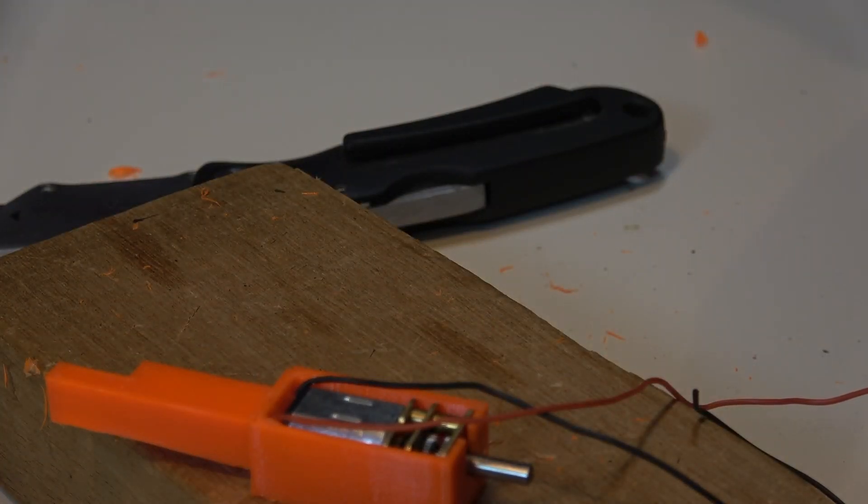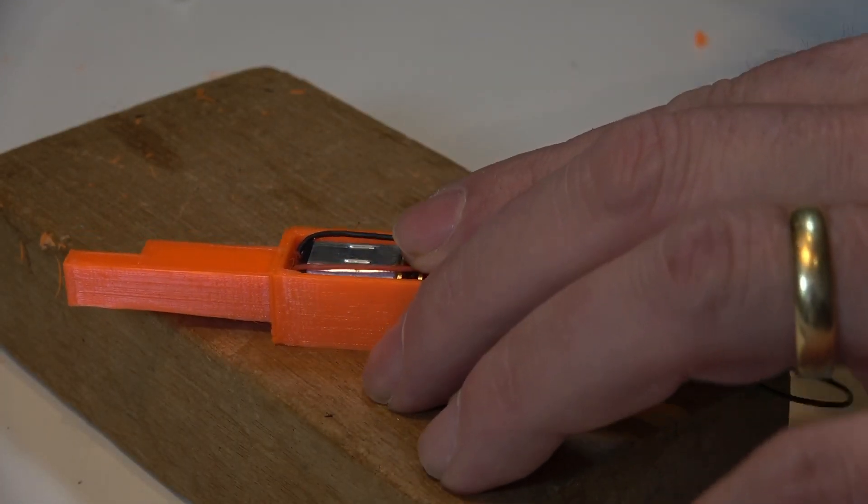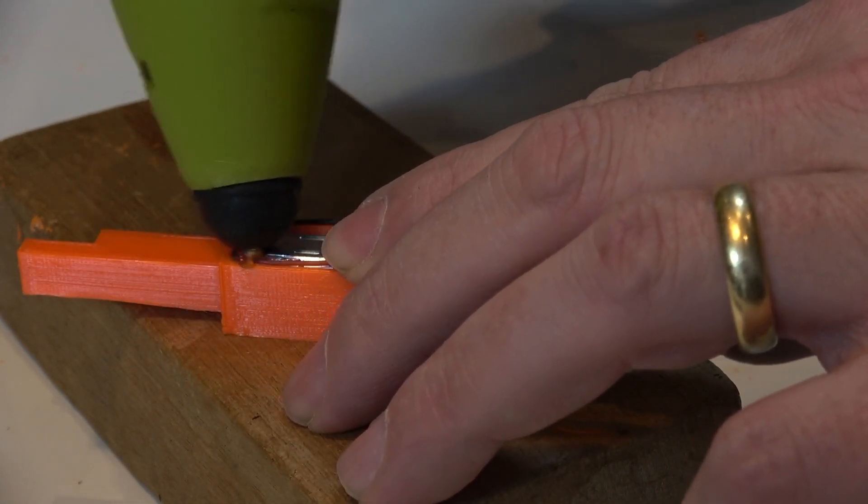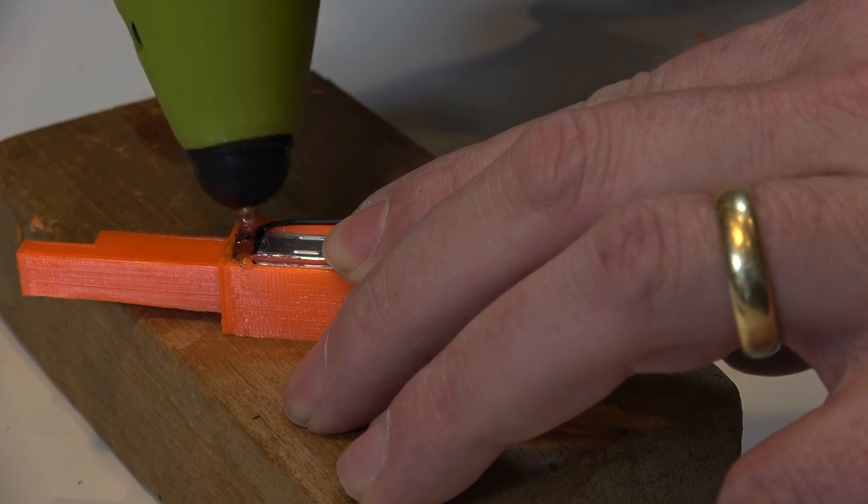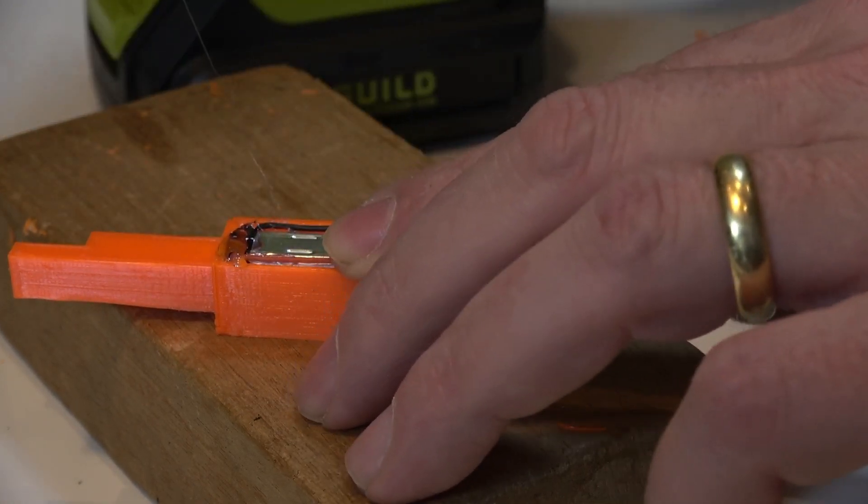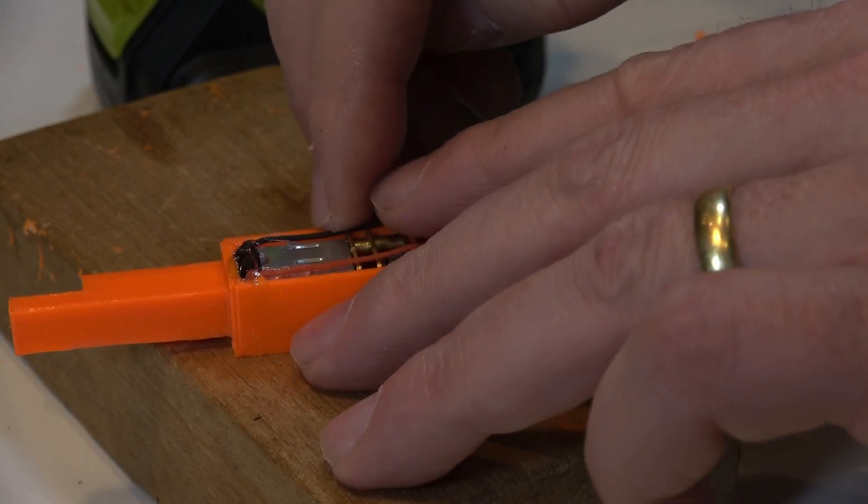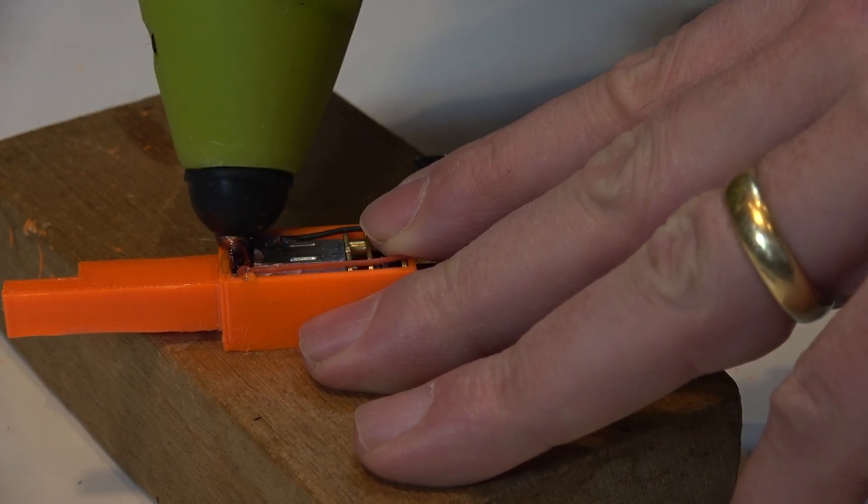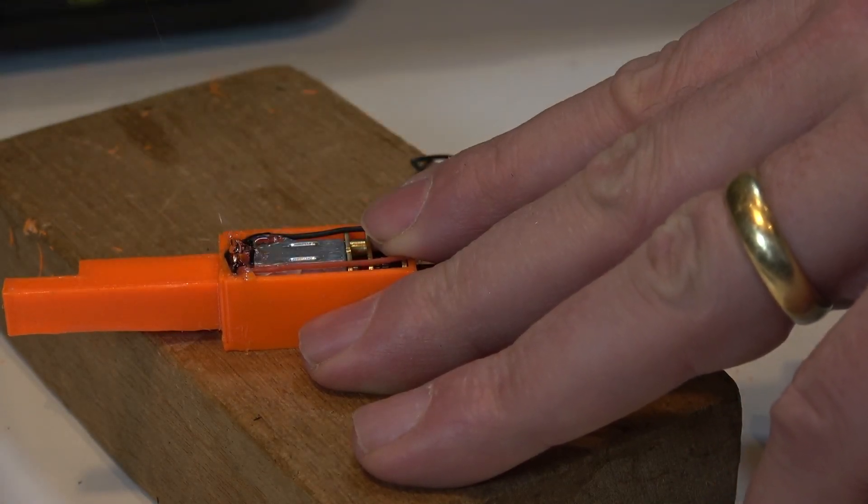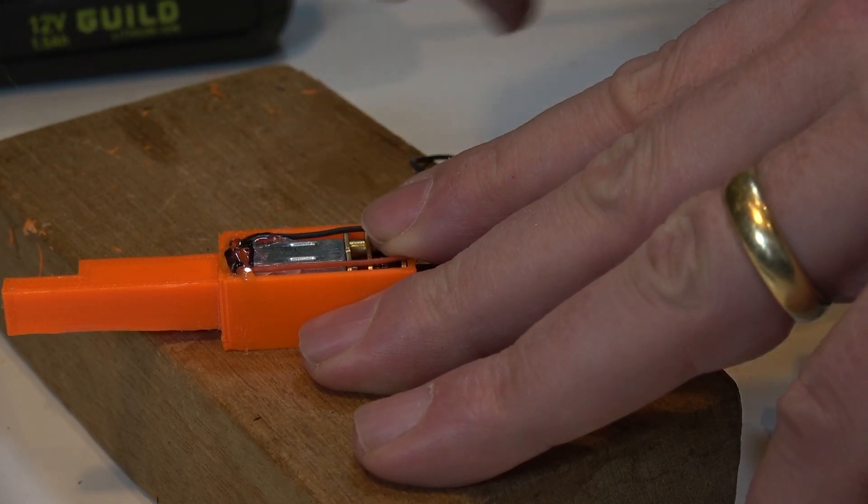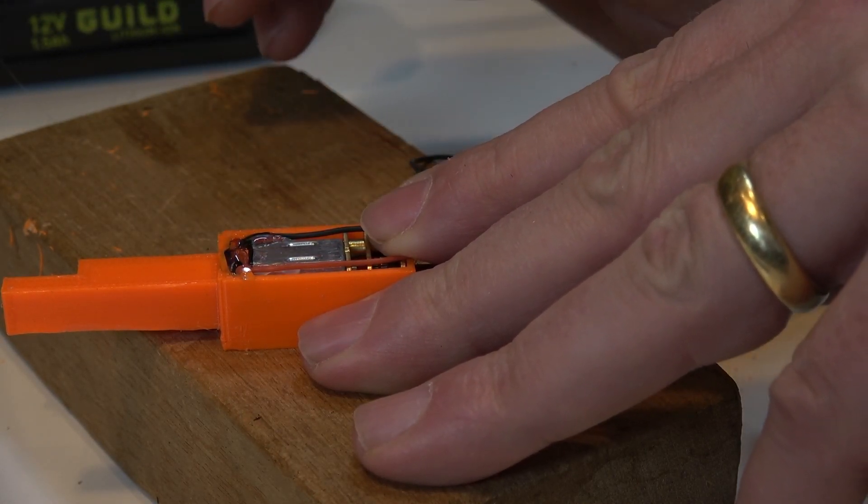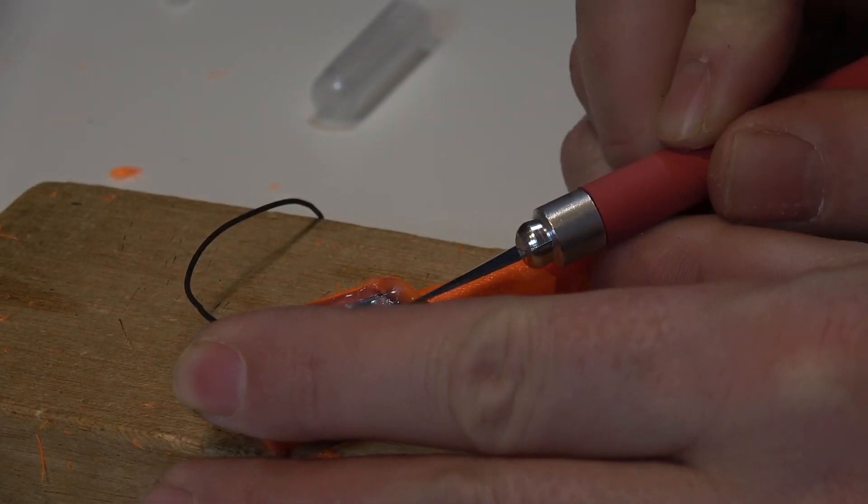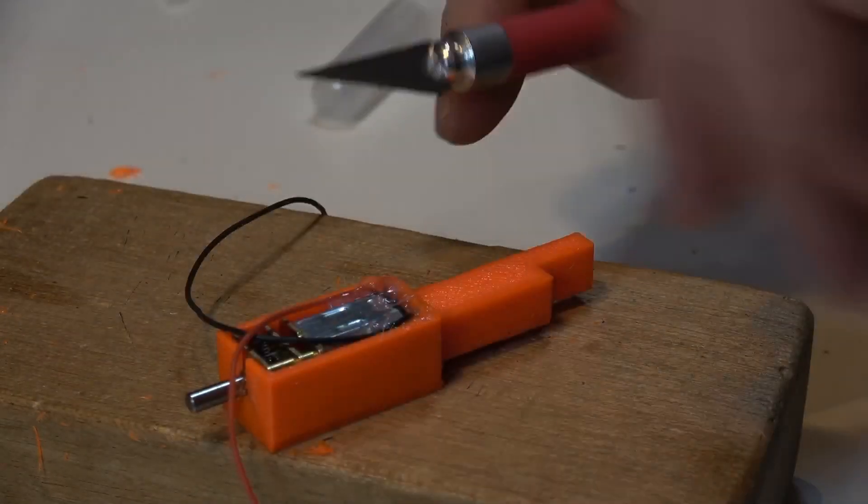I'll just heat up the hot glue gun. You don't need masses of it, just a little bit. So I'll get some in there. And if you put too much on, you can always slice it off afterwards. Some on that side, some on that side there. That should be good. Let that cool, and then I'm just going to trim out a little bit between the wires here for where the spring is going to go.